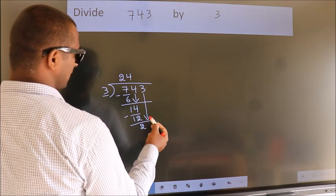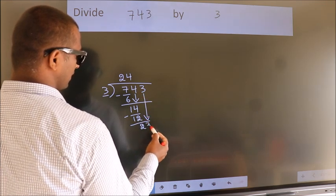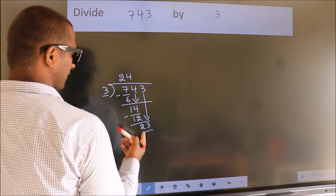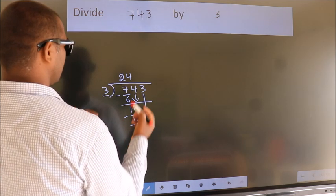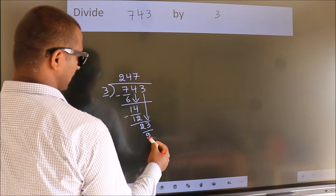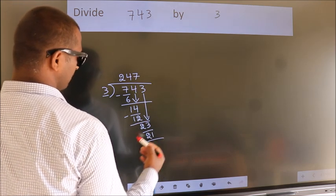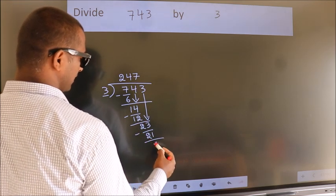So 3 down, so 23. A number close to 23 in the 3 table is 3 sevens 21. Now we subtract. We get 2.